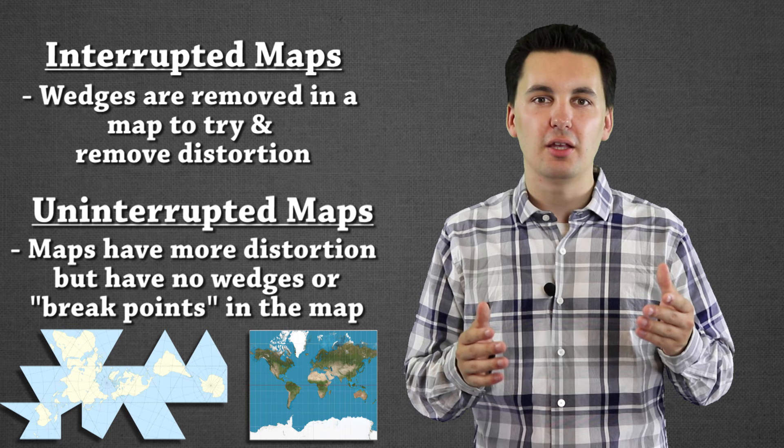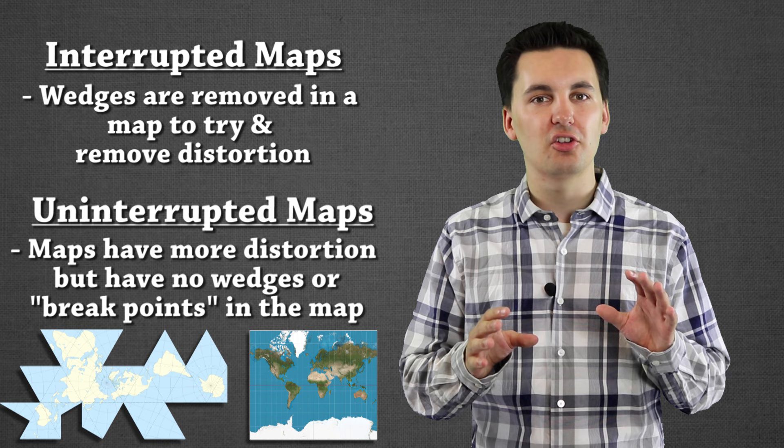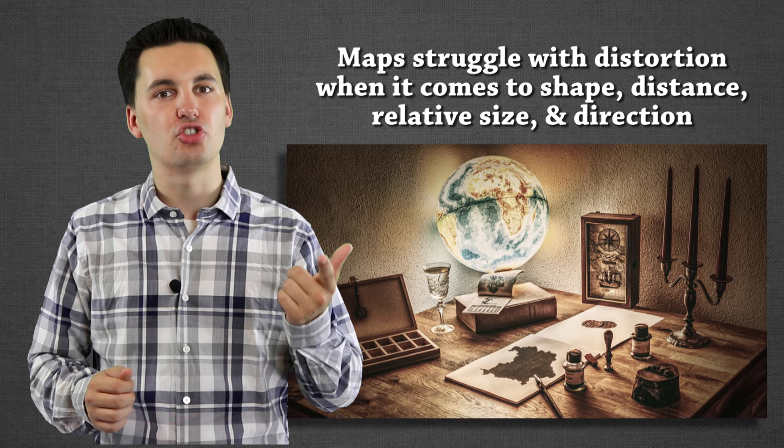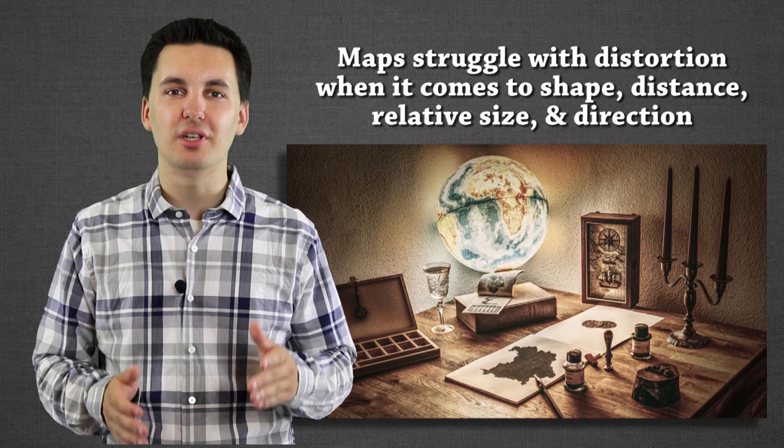An uninterrupted map might have more distortion with shape and size, but it'll be better for actual distance and direction. And this gets into our biggest problem with maps — distortion. Every map projection we look at in this video has different problems with distortion, whether it be the size, the shape, the distance, or the direction. Make sure you remember that: the biggest problem with maps is distortion.